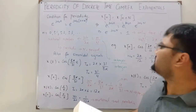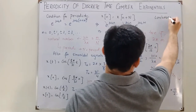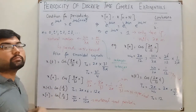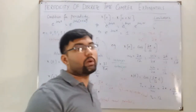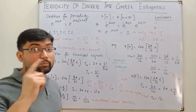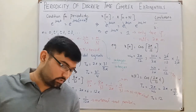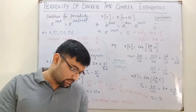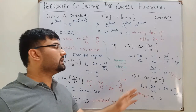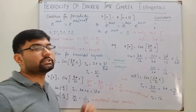Two conclusions: Number 1 — if a function is periodic in continuous time, it may or may not be periodic in discrete time. Number 2 — if a function is periodic in both continuous and discrete time, it may or may not have the same period in both domains. In discrete time, only integer sample points exist, so non-integer periods like 31/4 don't apply.